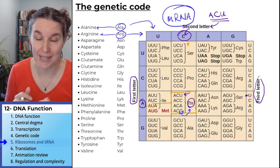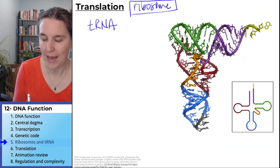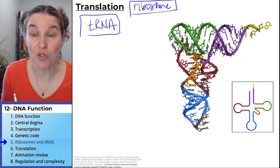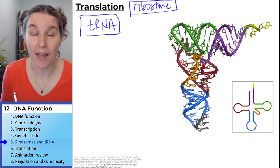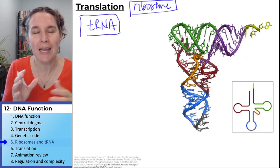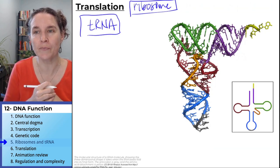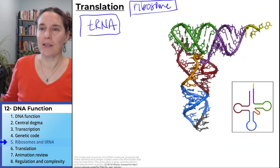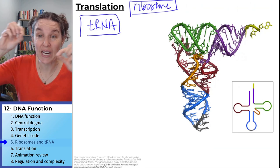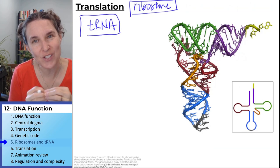Guess who does that? Guess who transfers the amino acid to the ribosome? That's tRNA. tRNA is a strand of RNA. Remember how we talked about DNA being a double-stranded molecule but RNA being a single-stranded molecule. Take a look at this mess — what even is that? That's one string of RNA that folds into a certain shape.